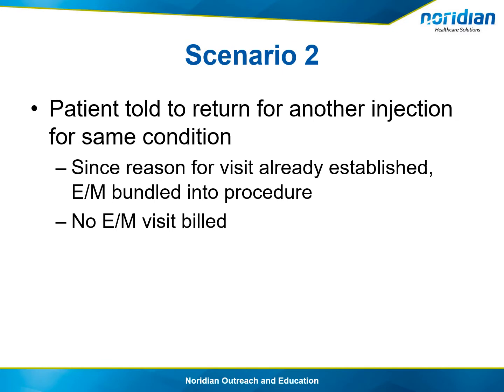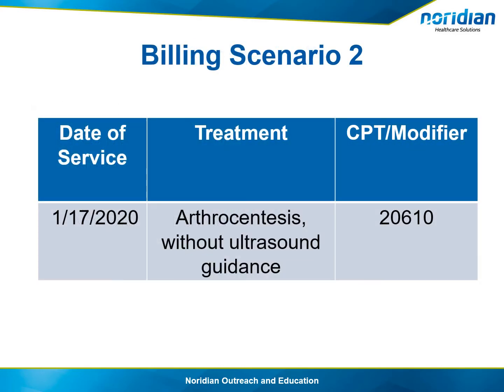In scenario 2, the patient was told to return for another injection for the same condition. Since the reason for the visit was previously established, the E&M service is bundled into the procedure — no E&M service is billed. Physicians may say that although the patient is coming back for another injection, they need to evaluate before doing the arthrocentesis, and this is fine. However, it cannot be billed separately. According to Medicare guidelines, the E&M cannot be billed separately because it has already been established that a second injection was going to be done. The evaluation before the procedure is minor and already included, so unless there is a significant separately identifiable service rendered, a visit should not be charged separately.